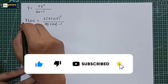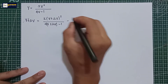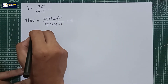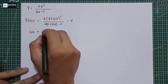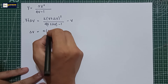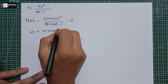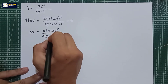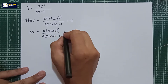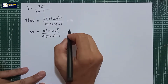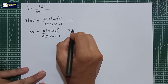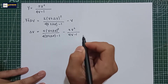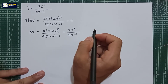So delta y is equal to 5(x plus delta x) squared all over by (4x plus delta x minus 1), minus y, where y is equal to 5x squared all over by 4x minus 1. The next step is to divide both sides by delta x.